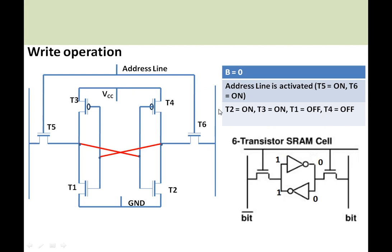Here you can see the write operation — how one bit is written to the SRAM memory cell. Whenever bit 0 needs to be written, the bit line is made 0. Then the address line (or word line) is activated, T5 and T6 are switched on. Bit 0 is applied to the output of inverter 2 and the input of inverter 1; the complement is applied to the output of inverter 1 and input of inverter 2, causing T3 and T2 to switch on and T1 and T4 to switch off.